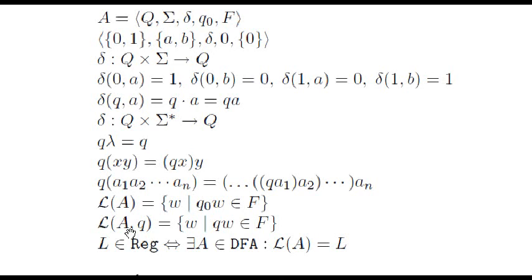We can also define the language recognized from a concrete state q as the set of words that take us to an accepting state starting the execution in q. A language is called regular if there exists a deterministic finite automaton that recognizes it.